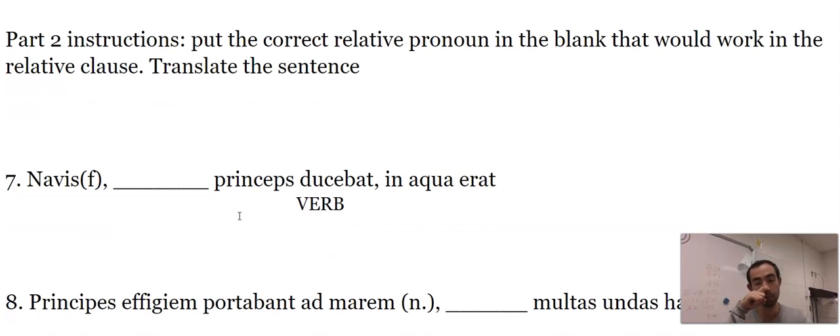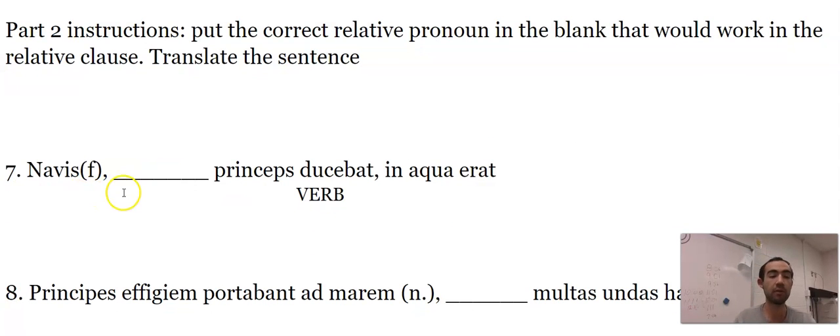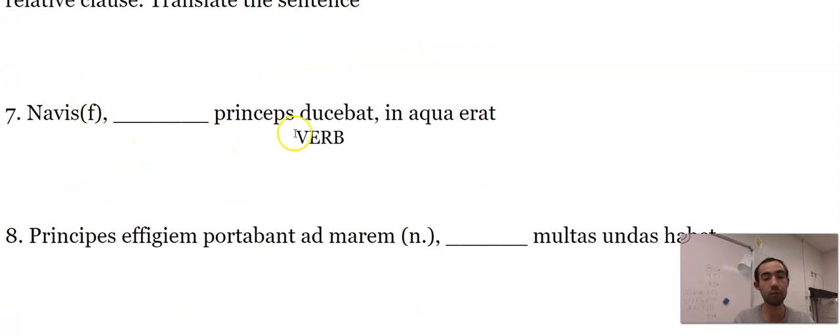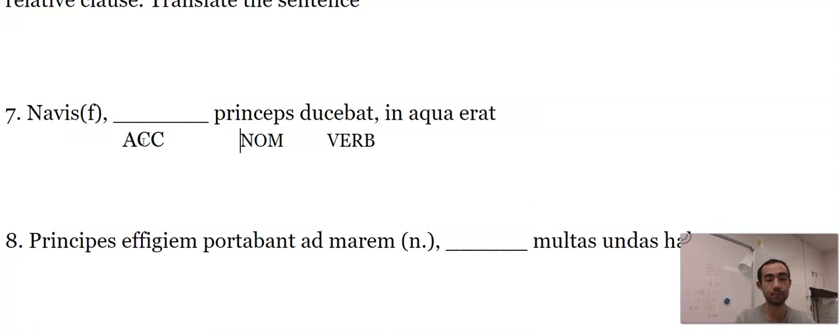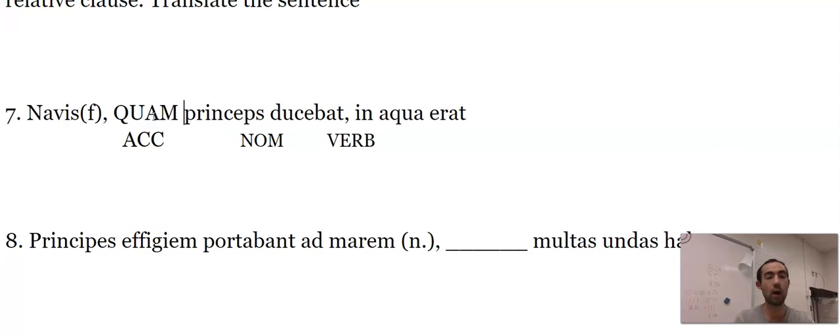On to the next section. We did the same thing, except now you're going to put the relative pronoun in. And navis is our relative pronoun. It's a feminine one. Princeps ducebat. Ducebat is the verb. Princeps is nominative. It's got the 'ps,' which is our third declension happy face ending. So this has to be accusative. I'll just put a little like ACC here or whatever. And that means this has to be quam.